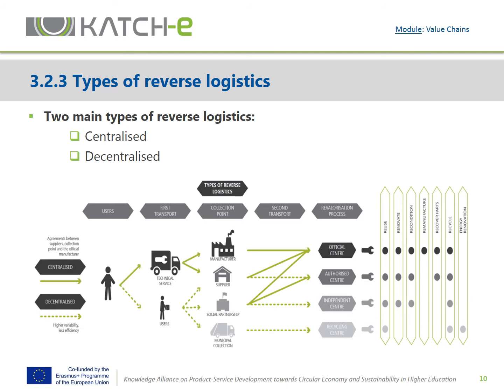There are two main types of reverse logistics: centralized and decentralized. Reverse logistics is more centralized when the official manufacturer is involved, as they provide more revalorization options and therefore ensure a more efficient valorization tailored to each type of product. In contrast, decentralized reverse logistics is more unpredictable and less effective. The time elapsed between disposal and the recovery process can be extended, and there is more likelihood the product will get stuck and never receive a recovery treatment. The further away a collection point is from the official manufacturer, the fewer recovery options are available.